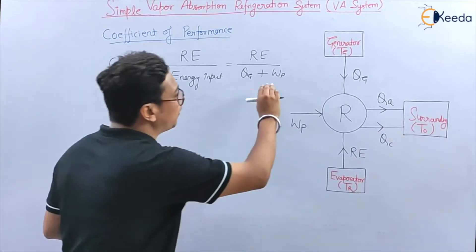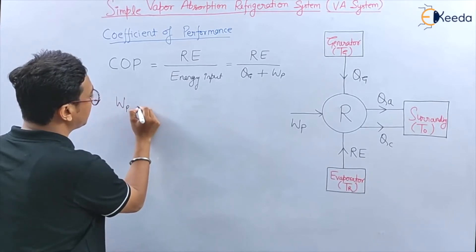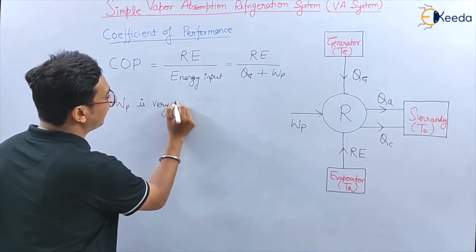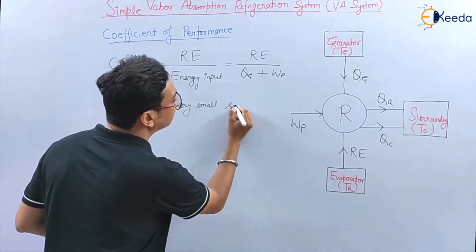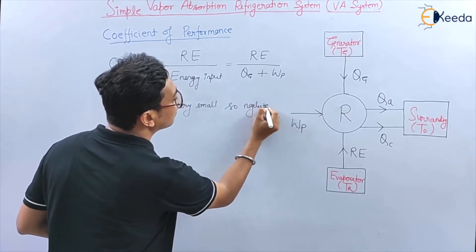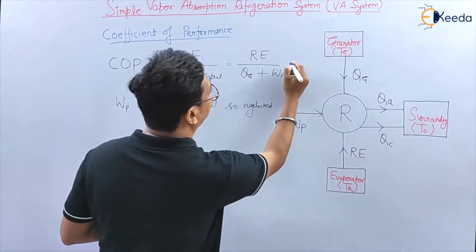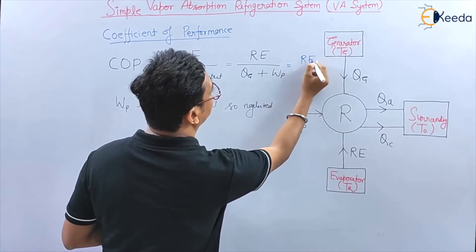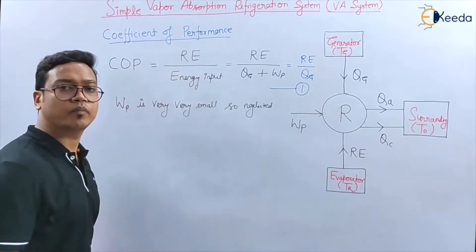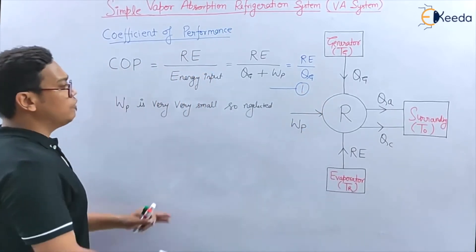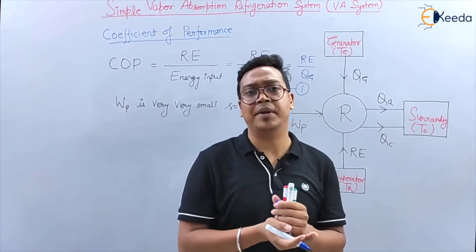Friends, WP — the pump work — is very very small, so we neglect it. Therefore, we can write COP approximately equal to RE divided by QG.